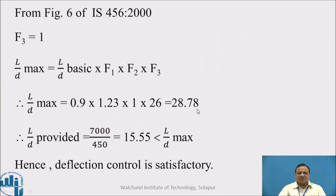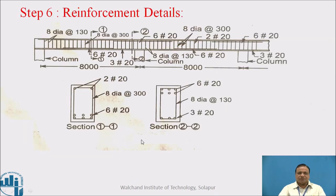This is the reinforcement details of continuous beam. Steel is maximum at bottom at mid-span and at top over the support. We have shown only one span out of three spans. At center we get six bars at bottom and at the end we have six bars at top. This is the section at mid span and this is the section at support.